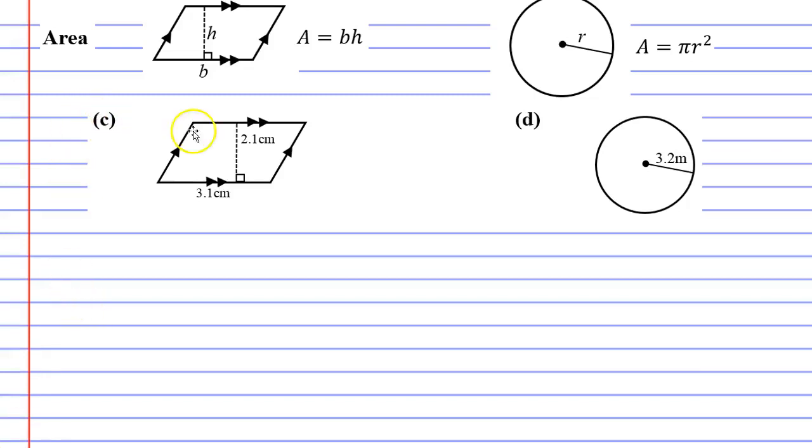We're going to do questions C and D for example one. We've got two shapes: a parallelogram and a circle. The parallelogram is just like when you calculated the area of a rectangle—you just multiply the two sides together.